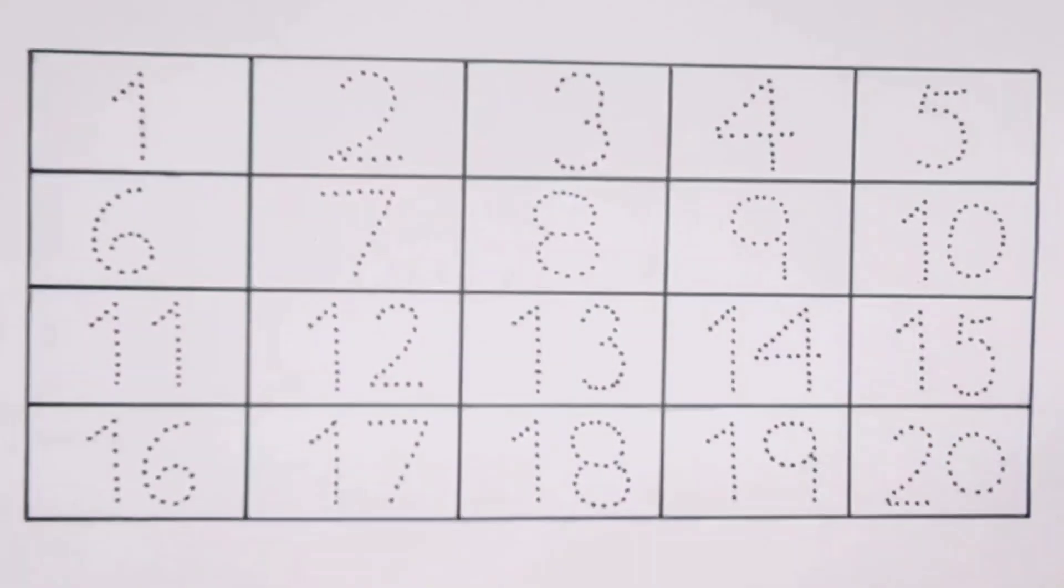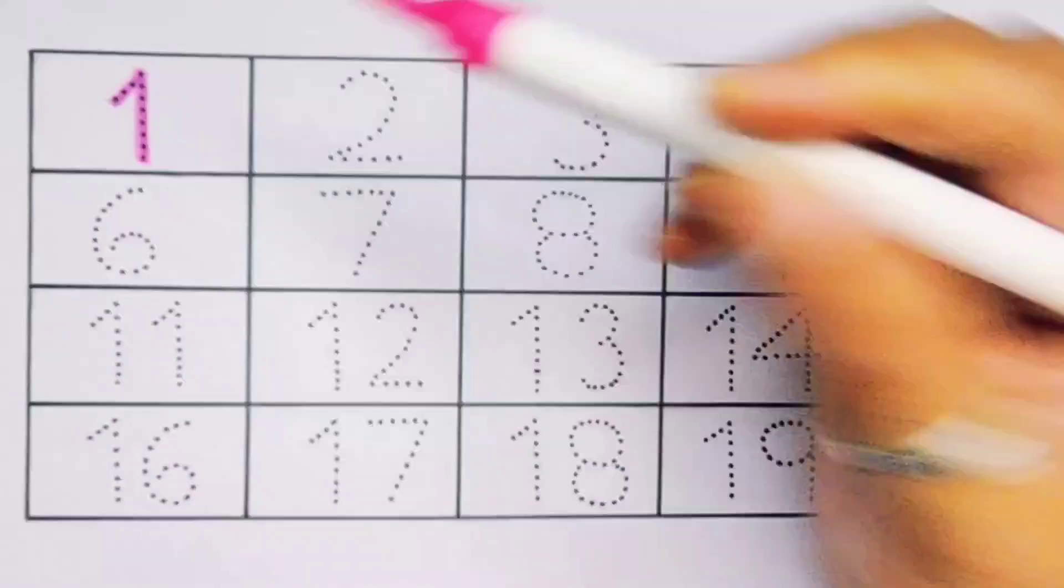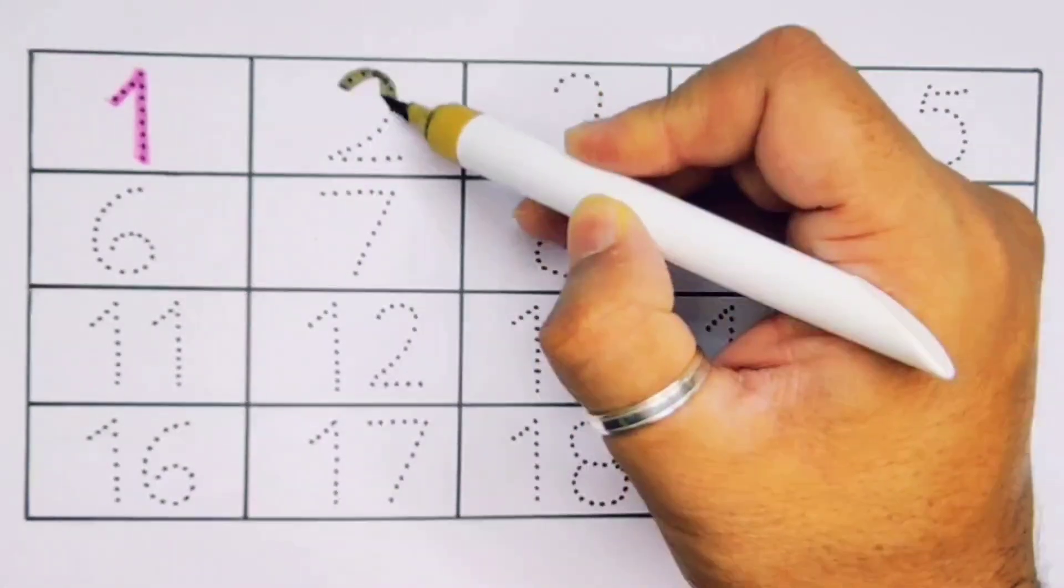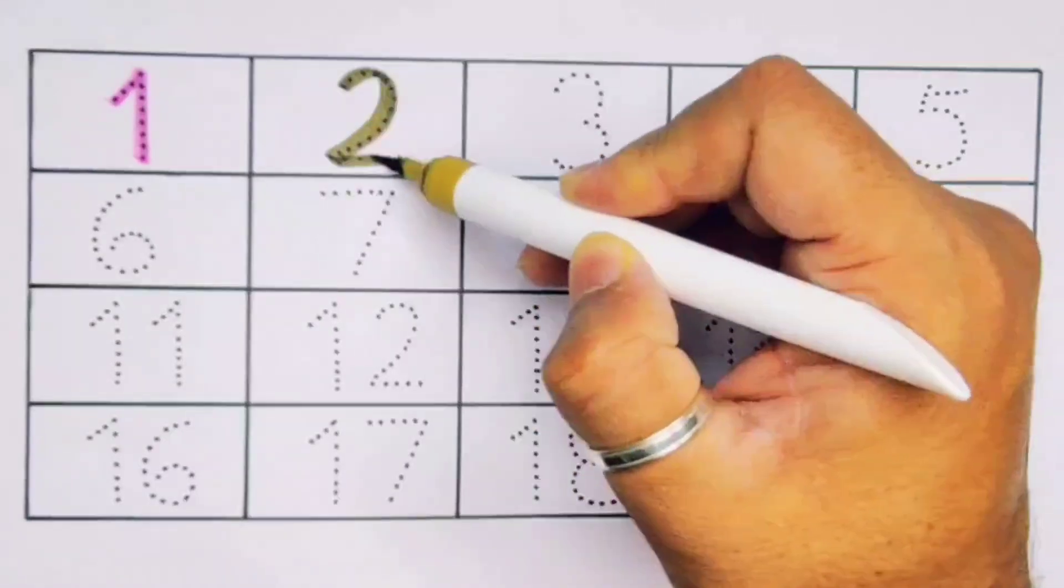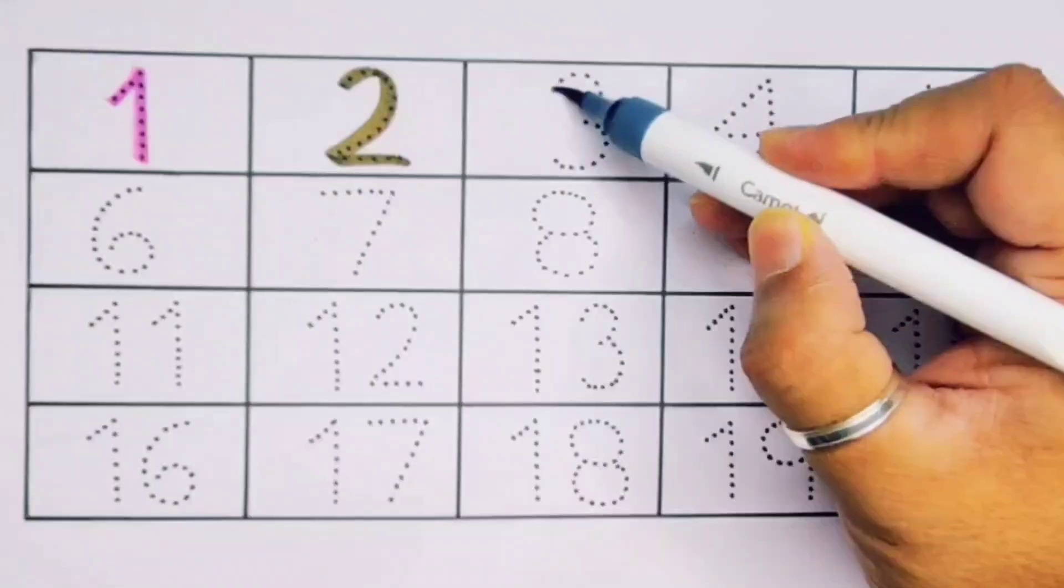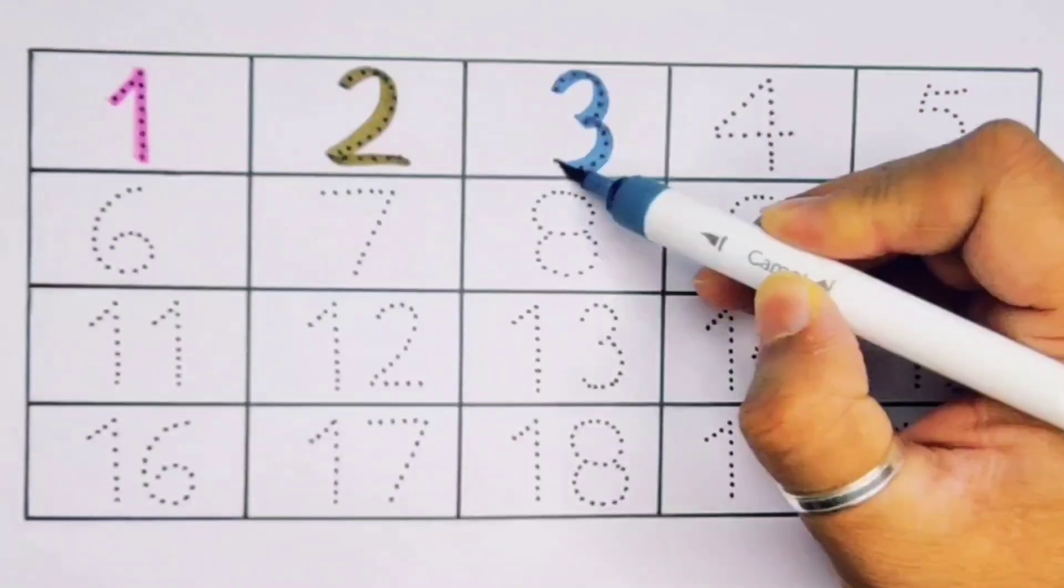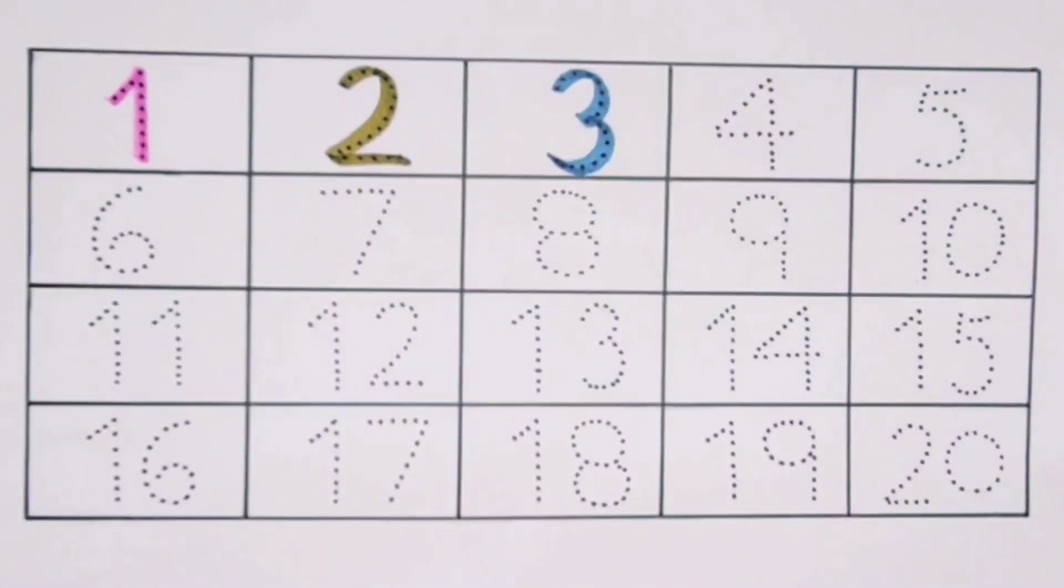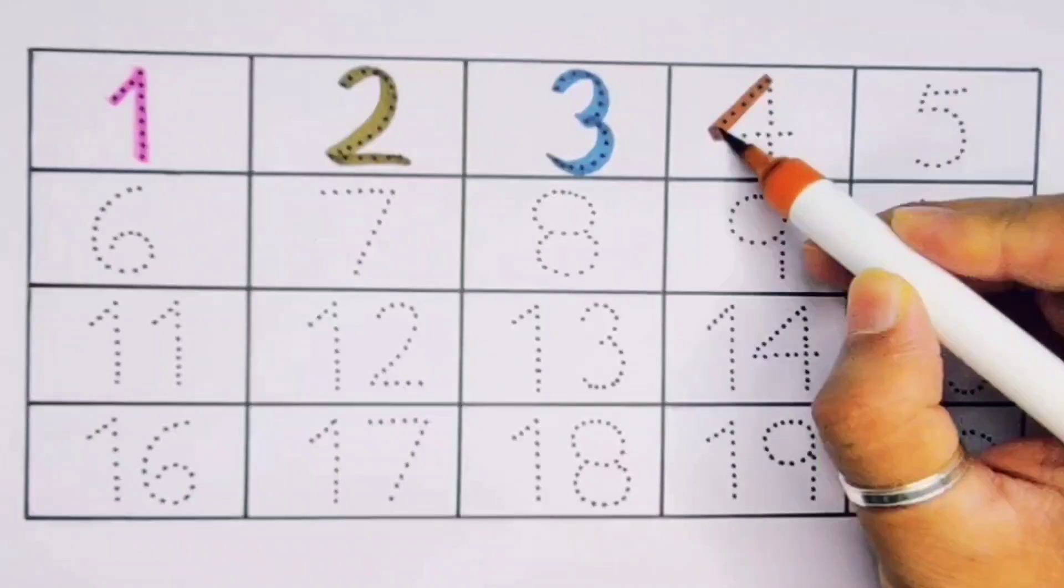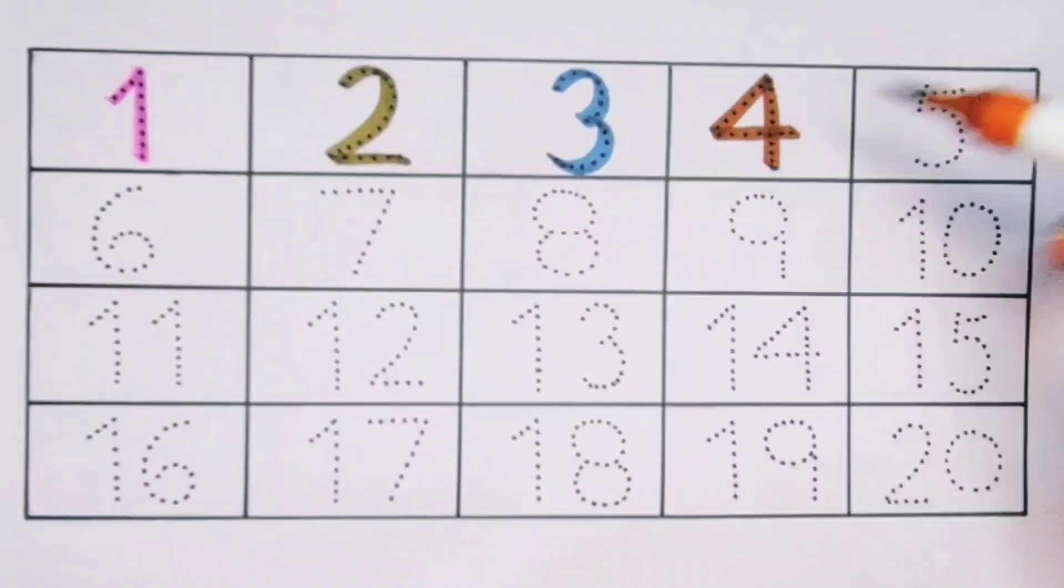First, 1, number 1. Next, 2, number 2. Next, 3, number 3. Next, 4, number 4.